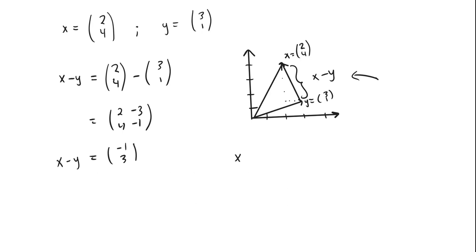Our inner product between any two vectors x and y is defined as x transpose times the matrix [1, -1/2; -1/2, 1] times y. As an exercise, you can try to prove this is a valid inner product using the properties of symmetry, bilinearity, and positive definiteness — or just trust that it is valid.